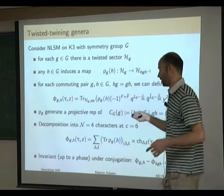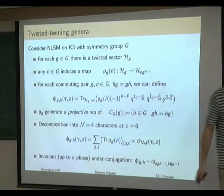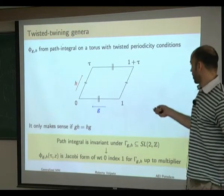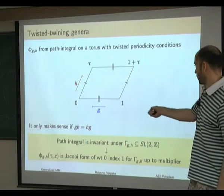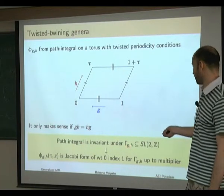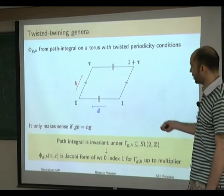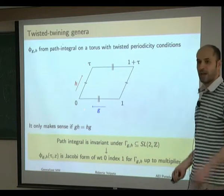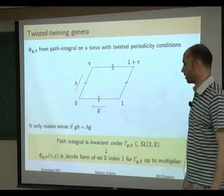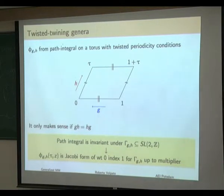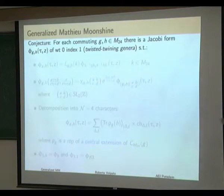From the description, there is clearly a decomposition into N=4 characters similar to the earlier case, since H_G decomposes into N=4 representations. The coefficients are traces over projective representations of the centralizer. These are invariant up to a phase under conjugation. One should allow for possible phases here due to the projective nature, with phases remaining ambiguous.